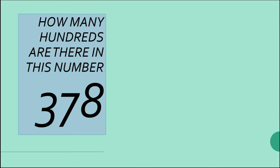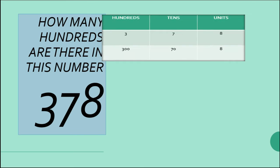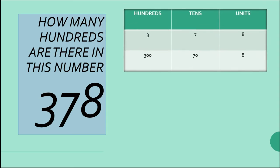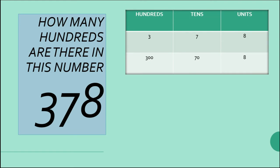The number is 378. How many hundreds are there in this number? The hundreds place, the tens place, and the units place — we need to identify each.